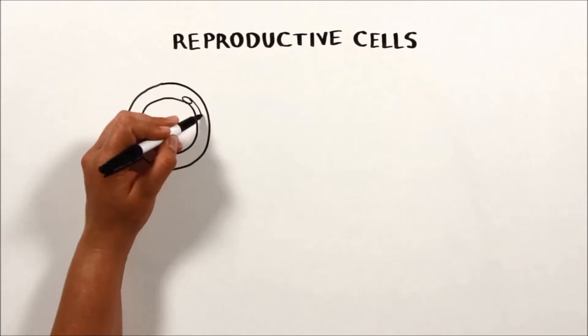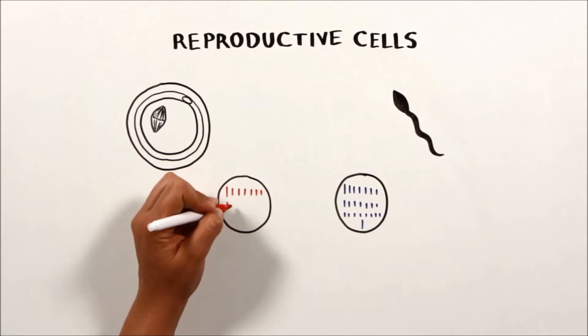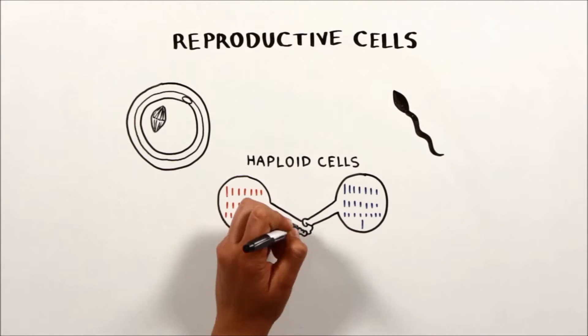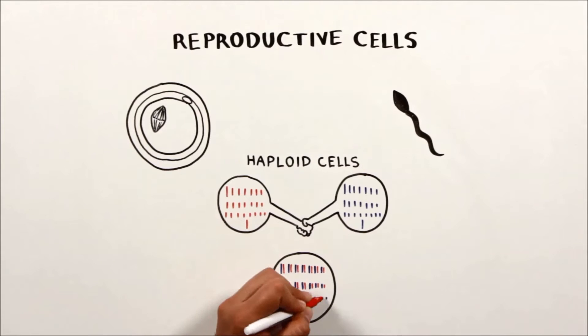Reproductive cells, the egg and the sperm, are the only exceptions that contain just one set of chromosomes and are called haploid cells. However, egg and sperm cannot divide to make more of their own, and during fertilization of the egg by the sperm, they generate a new diploid cell.